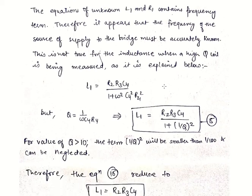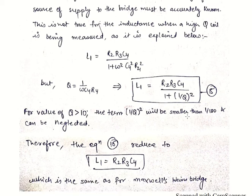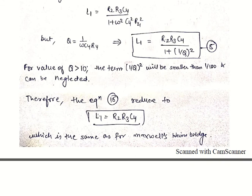For high-Q coils: L1 = R2·R3·C4 / (1 + ω²·C4²·R4²). Since Q = 1/(ω·C4·R4), substituting gives L1 = R2·R3·C4 / (1 + 1/Q²). For values of Q greater than 10, the term 1/Q² is smaller than 1/100 and can be neglected. The overall equation reduces to L1 = R2·R3·C4, which is the same expression as for Maxwell-Wayne's bridge.